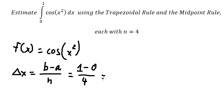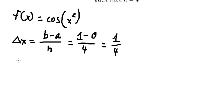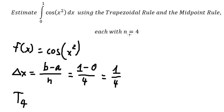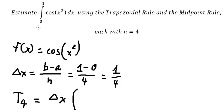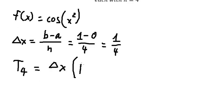So we have 1 over 4. For the Trapezoid Rule I will put T, and we put n equals 4. So we have delta x, which we just calculated, and for the first one we start at number zero, so that is f of zero.